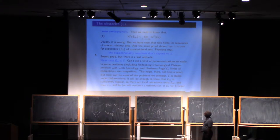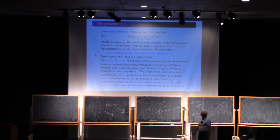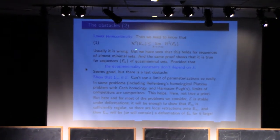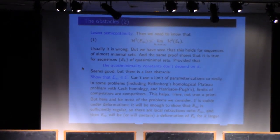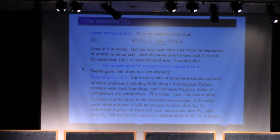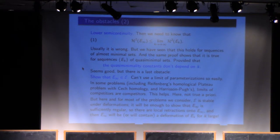Lower semi-continuity is linked with the fact that we have to take Hausdorff measures. In order to have it at the end, it's enough to take a minimizing sequence which is uniformly quasi-minimal. I have a definition of quasi-minimal — it's just a little bit more general than the almost minimal sets. Properties like rectifiability, Ahlfors-regularity, and so on, and the lower semi-continuity of Hausdorff measure are true for quasi-minimal sets. So we'll try to take a sequence of uniformly quasi-minimal competitors.